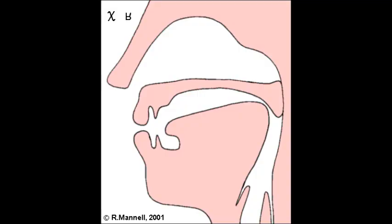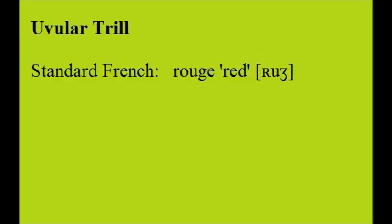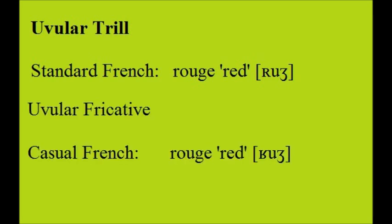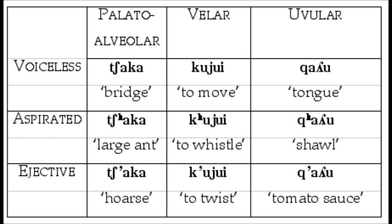Uvular sounds are produced with the uvula. Neither English nor Korean has uvular sounds, but they are found in a number of languages around the world. Standard French has a uvular trill, although in casual speech, most speakers use a uvular fricative. Here are some examples of uvular sounds in Quechua, an indigenous language spoken in Peru and Bolivia.